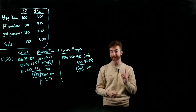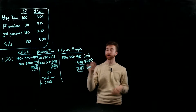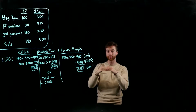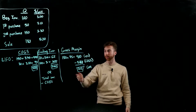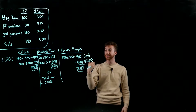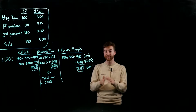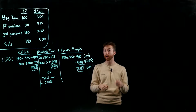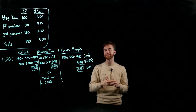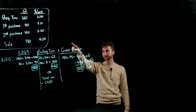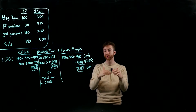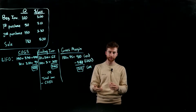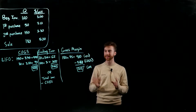Now we do the exact same problem using LIFO. Instead of the oldest goods, we track the most recent ones first. We sold 180 units, so we start with the second purchase — the most recent: 150 units × $3.30 = $495. That covers 150 of the 180 units. For the remaining 30, we go to the first purchase: 30 × $3.10 = $93. Total COGS under LIFO = $495 + $93 = $588.